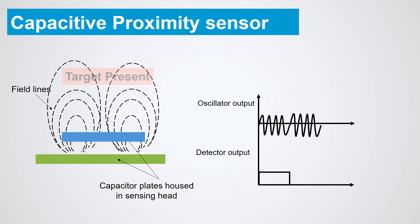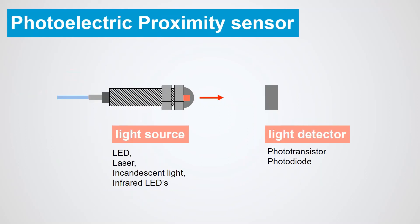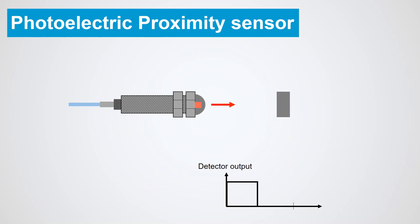Note the difference between inductive and capacitive sensors: inductive sensors oscillate when the target is absent, and capacitive sensors oscillate when the target is present. Photoelectric proximity sensors use a beam of light to detect the presence of objects that block or reflect the light beam. A beam of light passes from the light source and a phototransistor detects the presence or absence of light from the source. Incandescent light or infrared LEDs may be used as a light source.